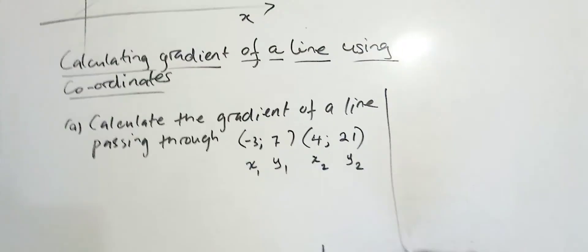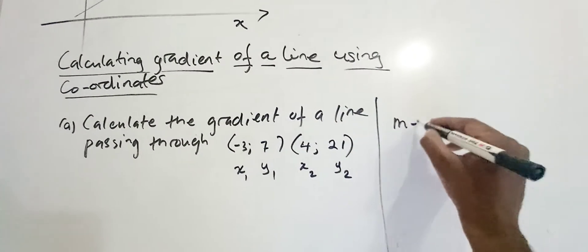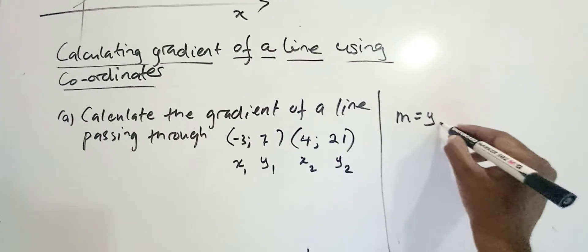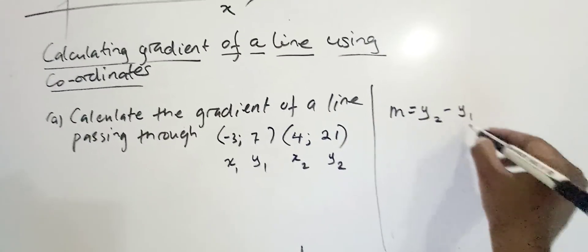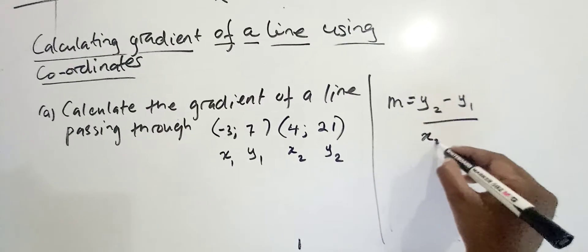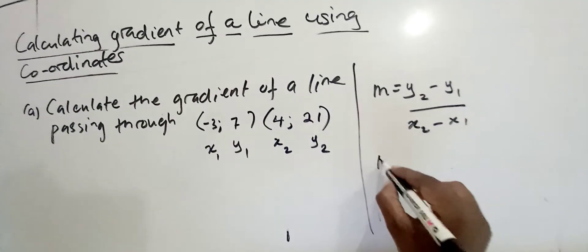Now, in that instance, your gradient m is equal to y2 minus y1, which is the increase in y, over x2 minus x1.